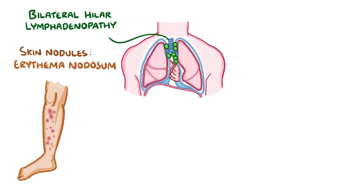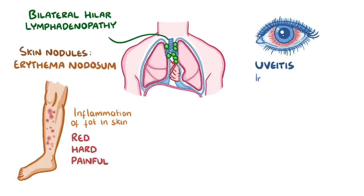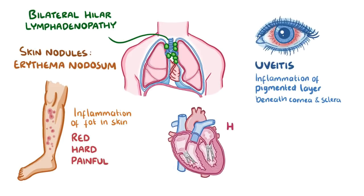Skin nodules are called erythema nodosum, and typically develop on the lower legs, along the tibias. These nodules are caused by inflammation of the fat within the skin layer, and they're typically red, hard, and painful. Sarcoidosis can also cause uveitis, which is inflammation in the pigmented layer of the eye beneath the cornea and sclera. It can also take effect in the heart, leading to problems like arrhythmias.